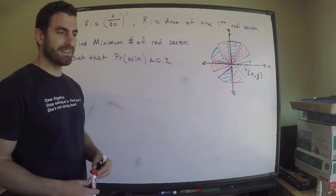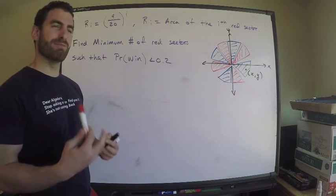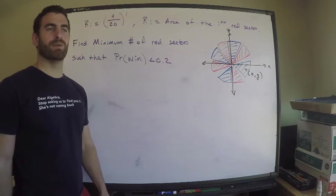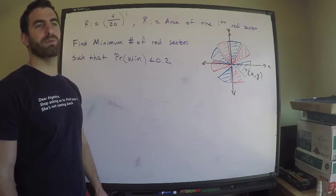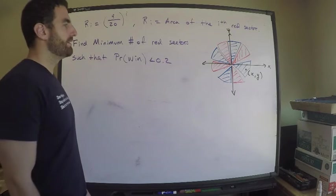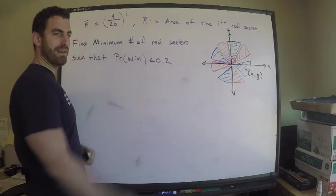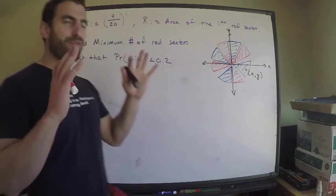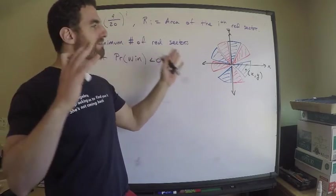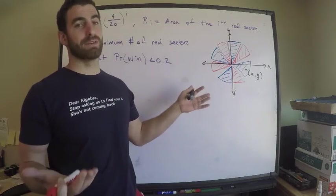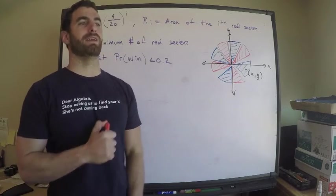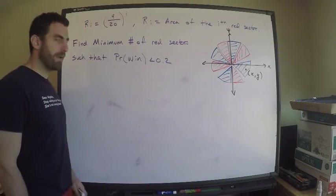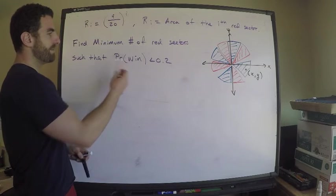This is like an example of a devious, conniving individual making this game. They don't want whoever's playing to win because there's money at stake. I want the minimum number of red sectors - I want you to think you have a good chance of winning. I want to know the minimum number of red sectors so the probability of winning is less than 0.2.